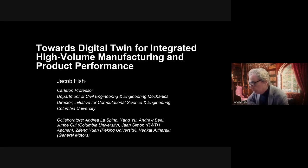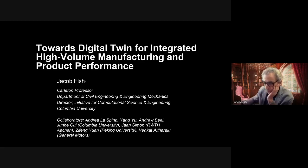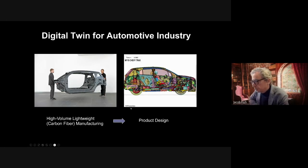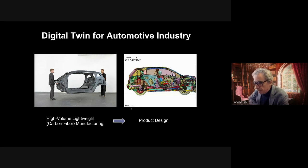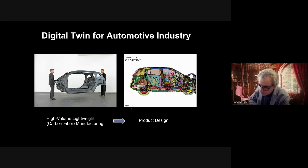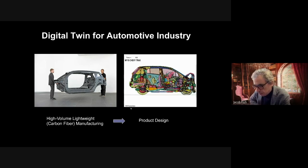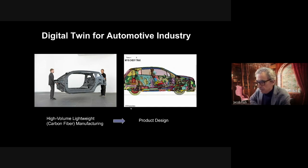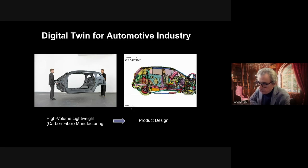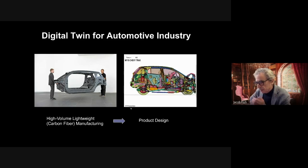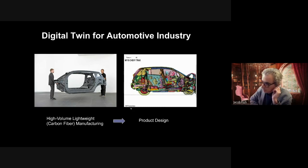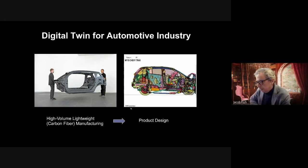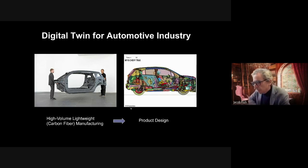I'm a professor at Columbia University and also director of Computational Science and Engineering Initiatives at Columbia University, which counts almost 100 faculty from pretty much any department. The digital twin I'm discussing is for the automotive industry, though it can apply to any industry involving manufacturing and product design — high volume manufacturing, lightweight manufacturing, such as parts made of carbon fiber, which is a multi-scale material system. The idea is how you design this integrated system.